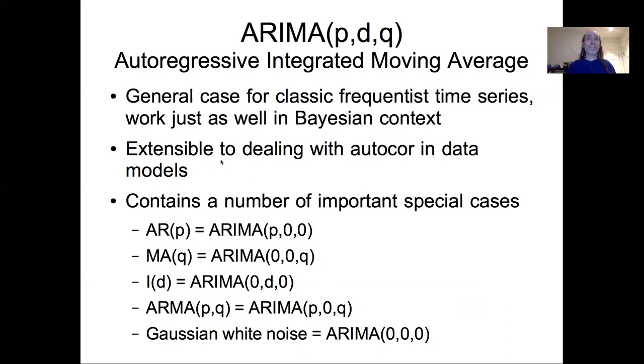generalized linear models, we can deal with autocorrelation and moving averages and integrations in data models and process models more generally. And again, as we started, there's a couple important special cases. The AR model, moving average model, integrated model, the ARMA model, and the Gaussian white noise are all important special cases of the ARIMA model.